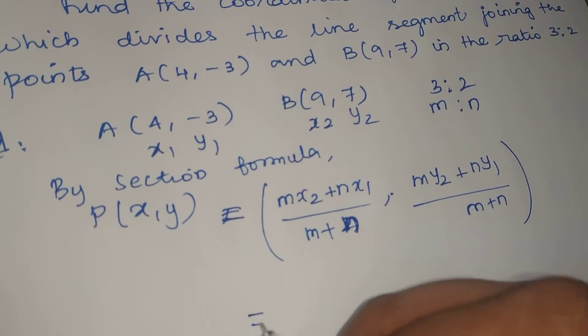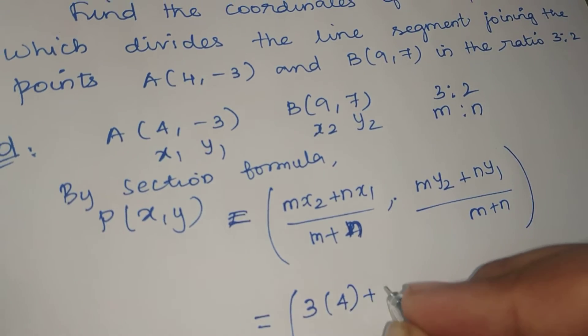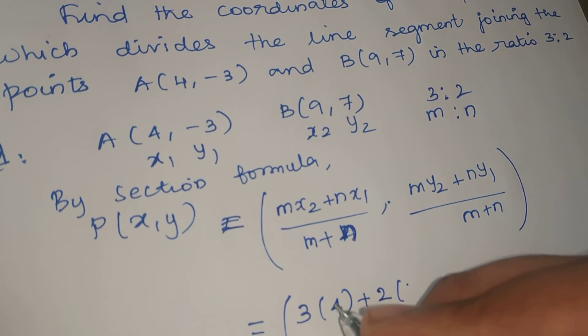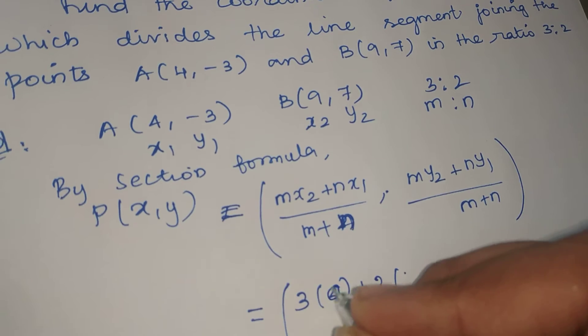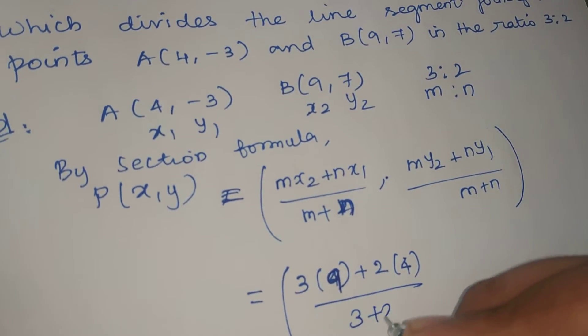Now substitute the values. For x-coordinate, it is 3 times 9 plus 2 times 4 divided by 3 plus 2.